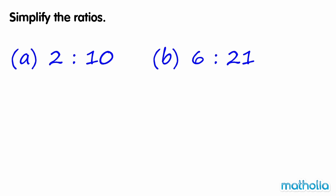Simplify the ratios. A. Both parts of the ratio are divisible by 2. 2 to 10 is equal to 1 to 5.